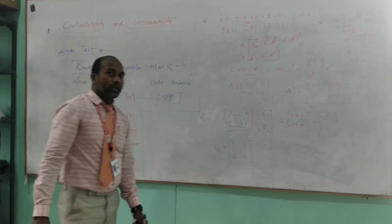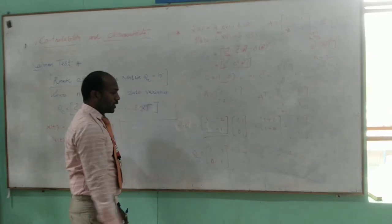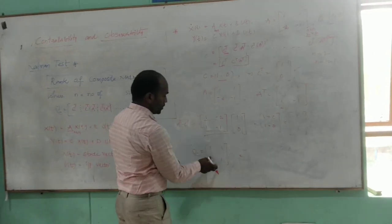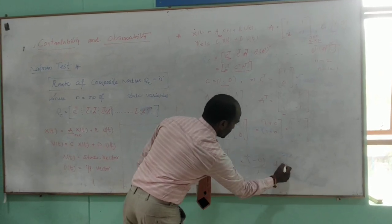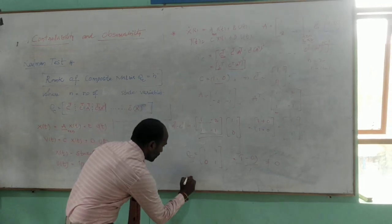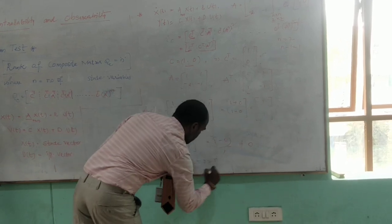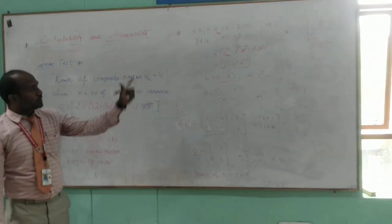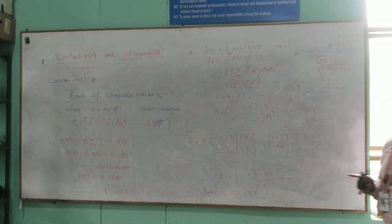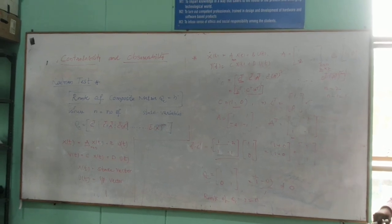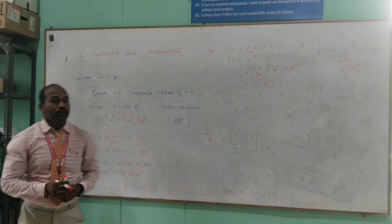Since the determinant is not zero, the rank of Qo is 2, which equals N = 2. Therefore, the system is observable. This is regarding controllability and observability. Thank you.